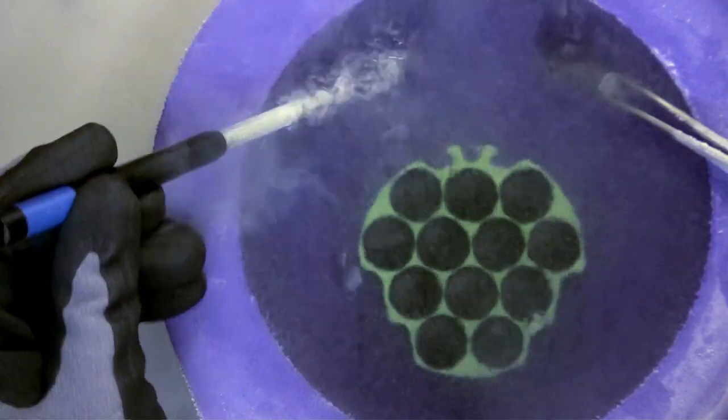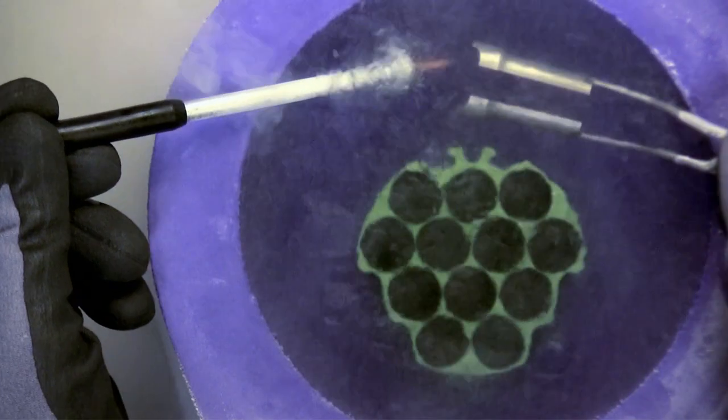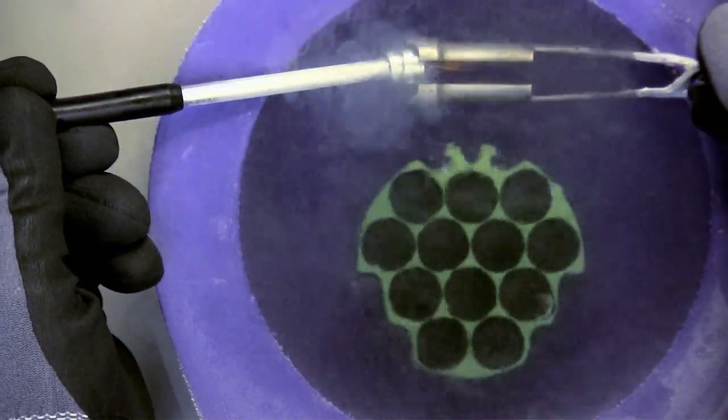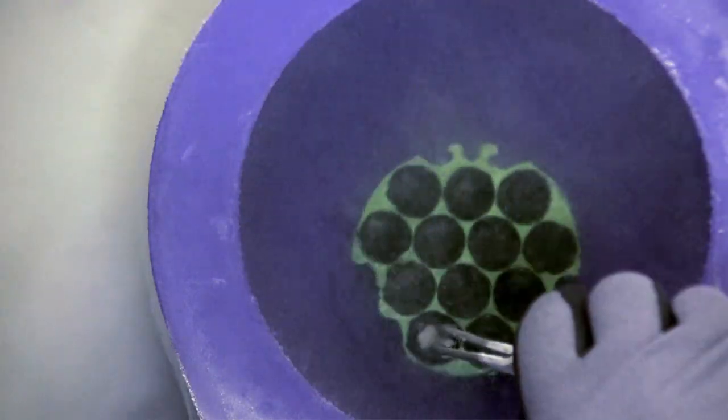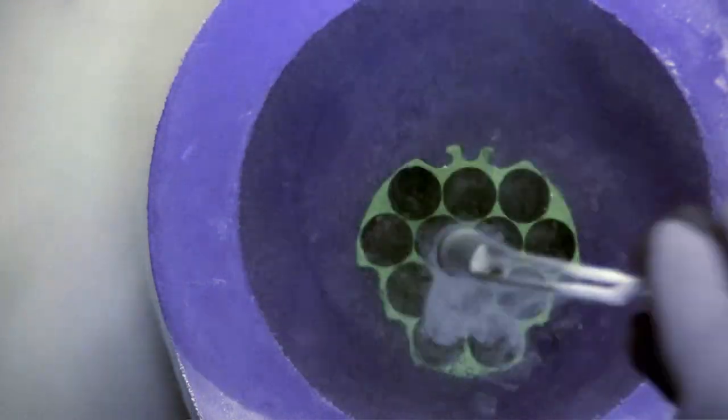After looping, plunge the sample into liquid nitrogen and then transfer to the tongs. Once the tongs are loaded, put the sample into the puck. The tongs are protecting the sample so there's no reason to rush this.